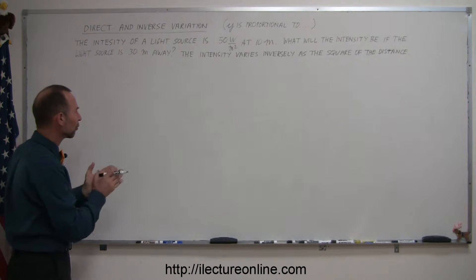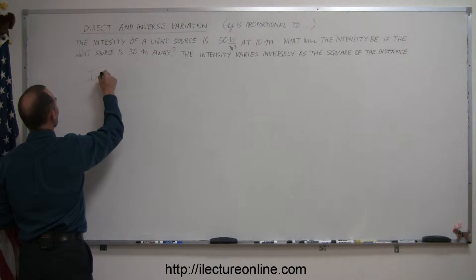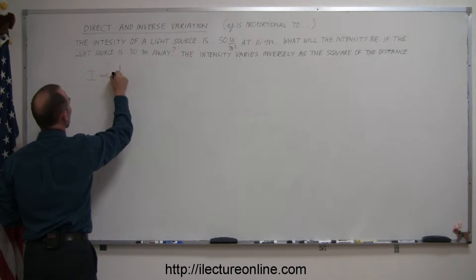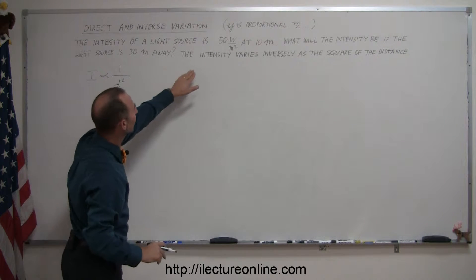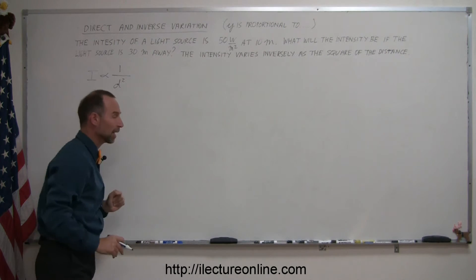So the strategy is to first write down the proportionality, in other words the intensity is proportional to 1 over the distance squared. So that's what they're saying here, the intensity varies inversely, 1 over the square of the distance, the distance squared.